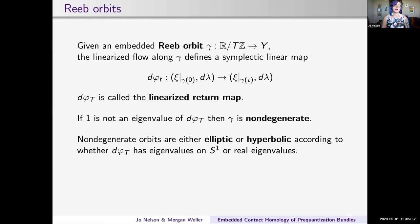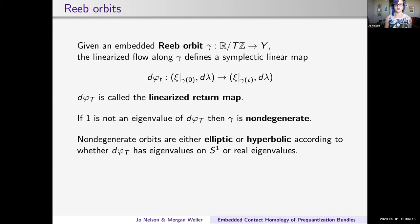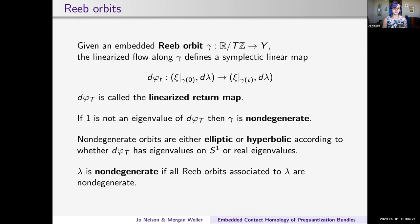If you have real eigenvalues, they come in a pair—usually E and 1/E. If they're negative real numbers, you say it's negative hyperbolic. If they're positive real numbers, you say they're positive hyperbolic. We say the contact form is non-degenerate if all the Reeb orbits associated to the Reeb vector field defined by lambda are non-degenerate. We're going to be concerned with coming up with non-degenerate contact forms when we sit down and try to compute ECH of a particular manifold.